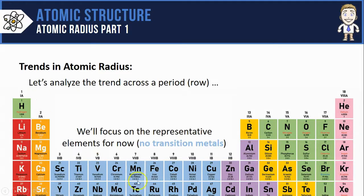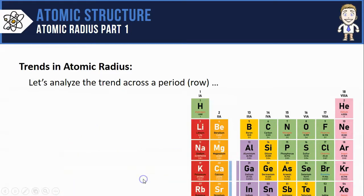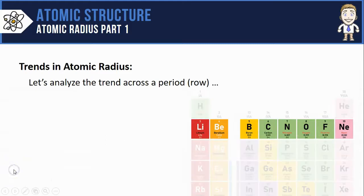We're also going to ignore these transition metals, focusing only on the representative elements. Let's make them go away completely. Lastly, I'm going to randomly choose row number 2 to focus on.